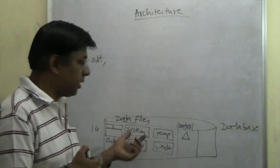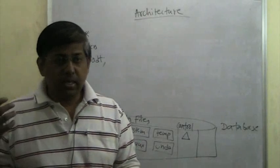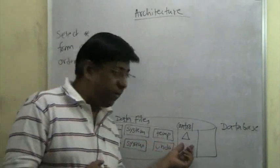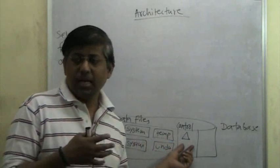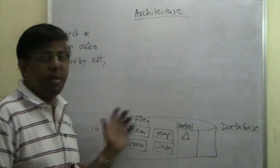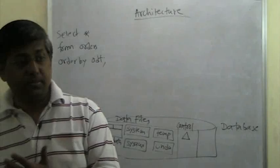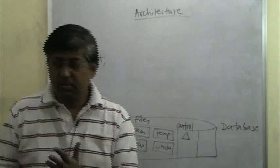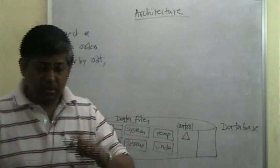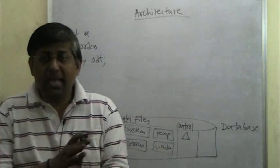The system tablespace contains metadata about the entire database — how many tables and all that. The control file functionality is very similar. It contains a lot of valuable information about your entire database: how many data files are there, how many tablespaces are there, and something called SCN numbers — system change number. The system change number is basically the age of the data file.